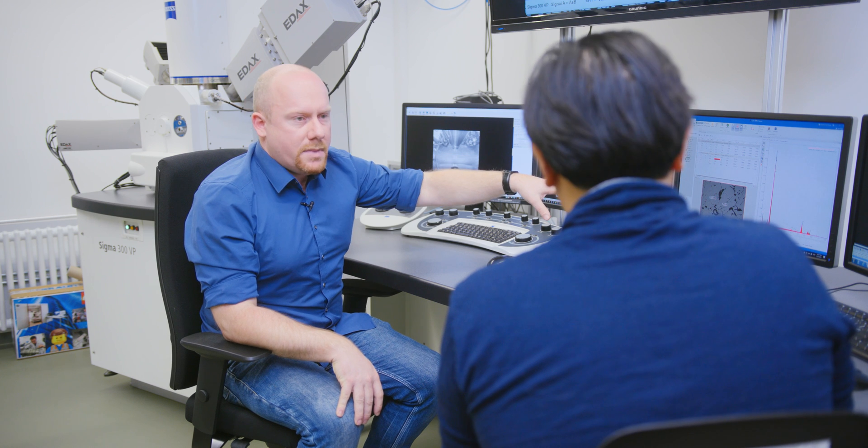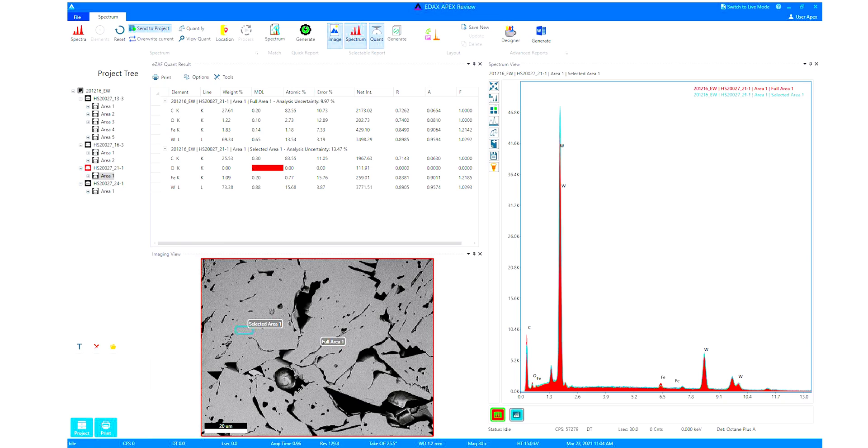Also here, I prepared some EDS measurements. So the chemical composition measurement. What you basically get is this spectrum here on the right indicating which elements are present in the sample.